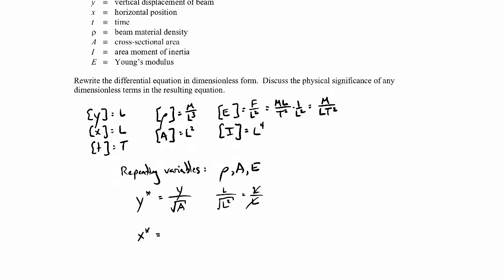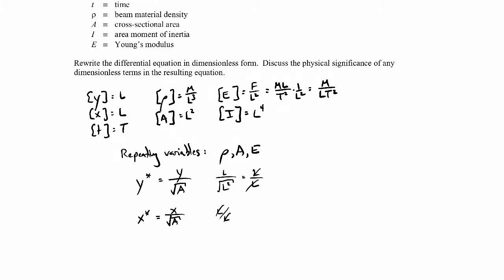To make a dimensionless x quantity, it's just x divided by the square root of the area — that'll be a length over a length. Now let's move on to the dimensionless time. The quantity in our repeating variables that involves time is the elastic modulus, so I'd certainly want to multiply the time by the square root of E, because that'll give me a time in the denominator and get rid of the time squared.